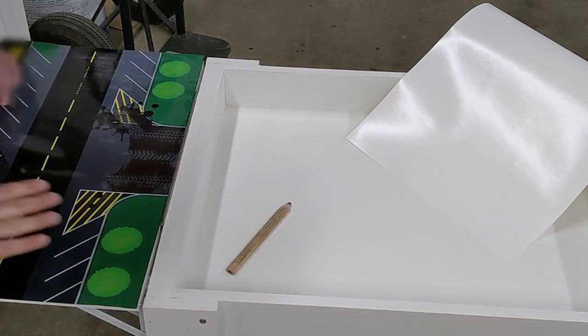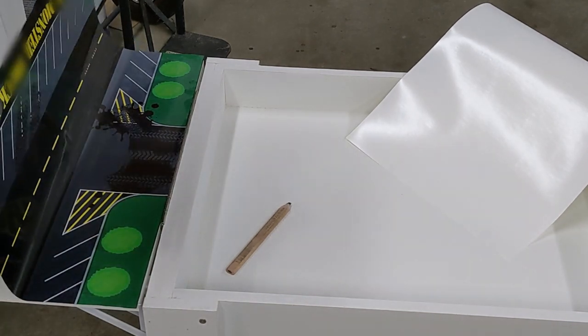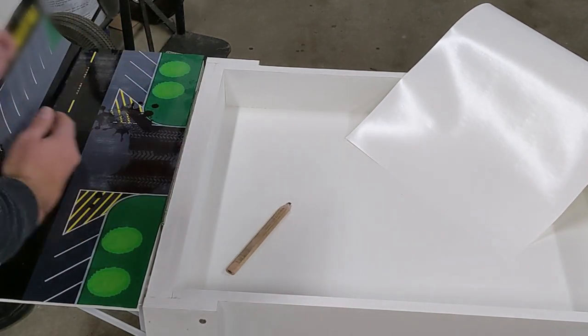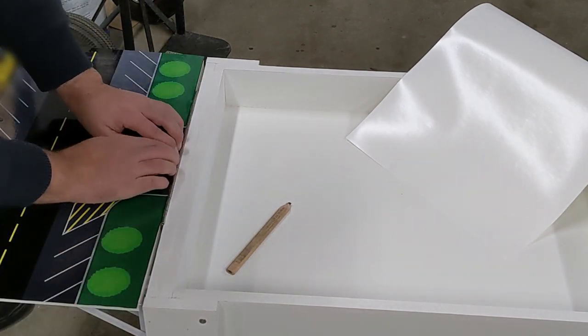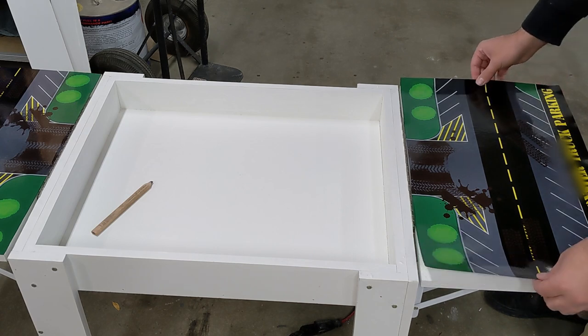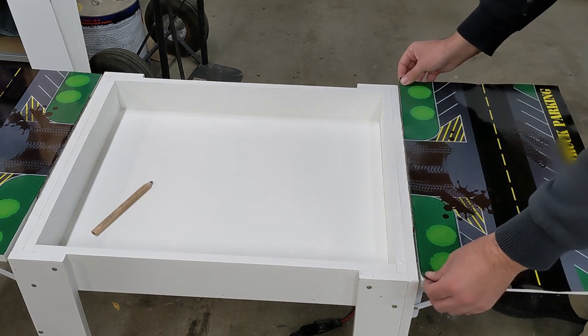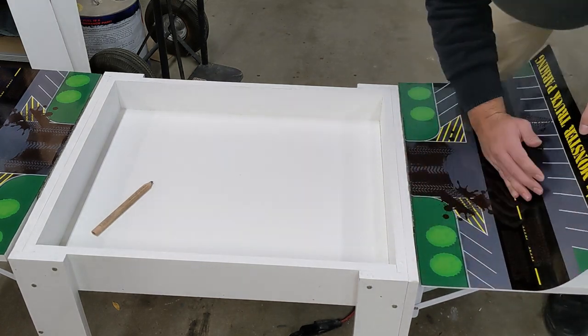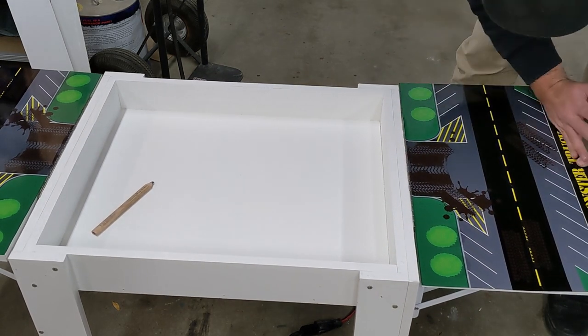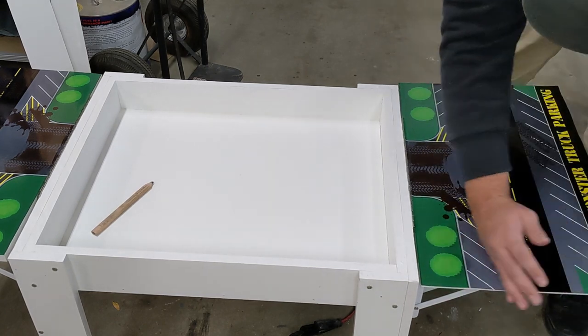I also went to a vinyl shop and had these custom stickers made for my kids. So they would each have their own place to park their motorcycles and monster trucks or whatever that they're playing with on this table. And after applying those in place, I just filled it with sand and it was time to let the kids play.